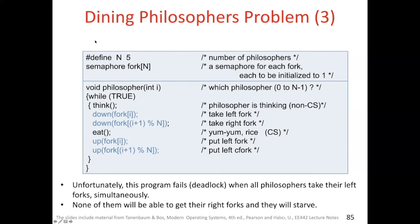Here is a candidate solution for the dining philosophers problem. N is defined as 5, which is the number of philosophers. Fork is an array of type semaphore of size N. There is a semaphore for each fork, each initialized to 1. The philosopher function takes integer parameter I, indicating which philosopher, from 0 to N minus 1.